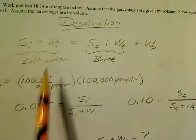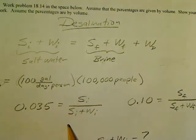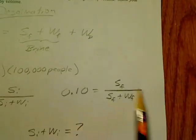The saltwater is said to have a 3.5 percent concentration of salt, so you express it like this. The brine has a 10 percent concentration of salt.